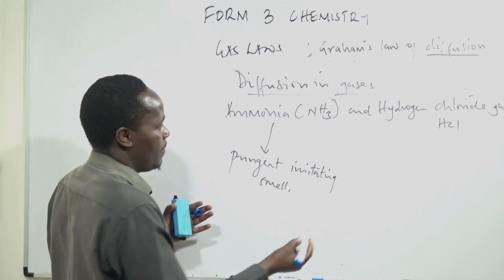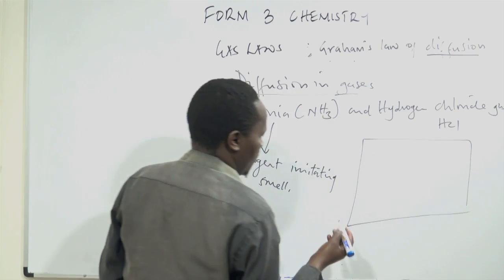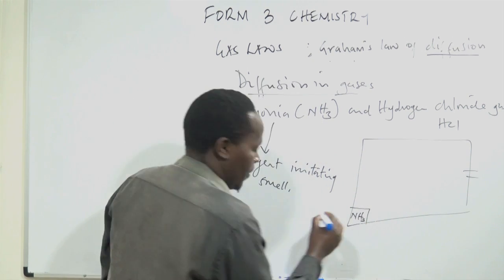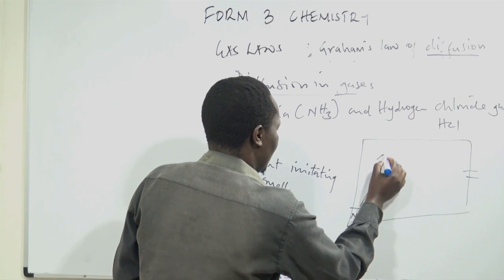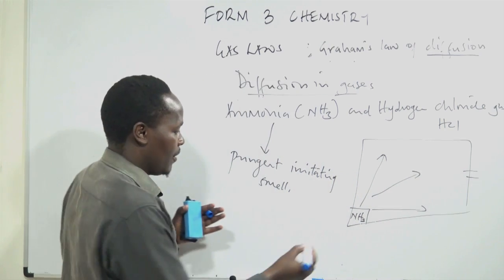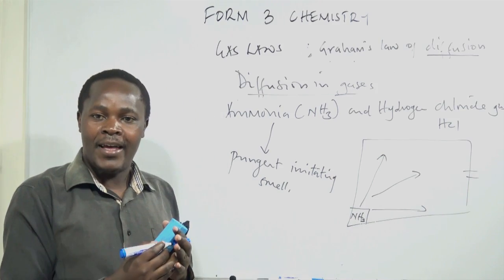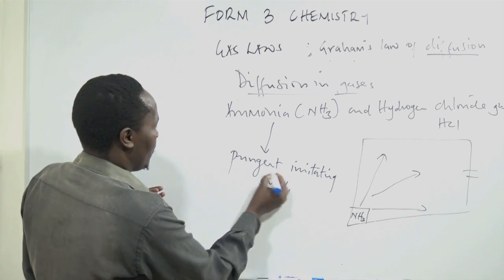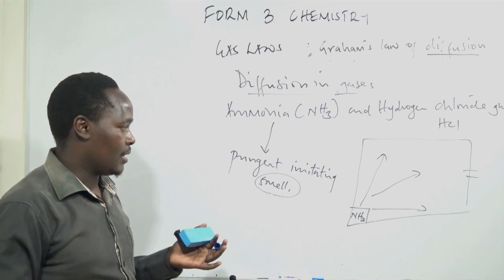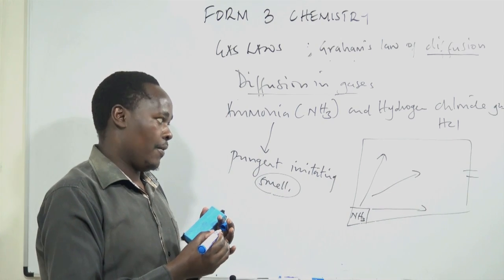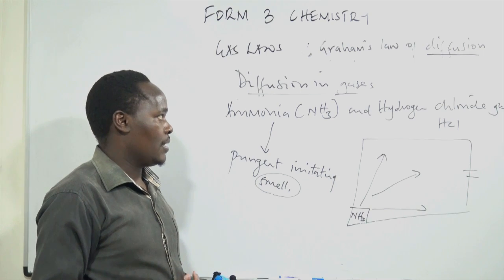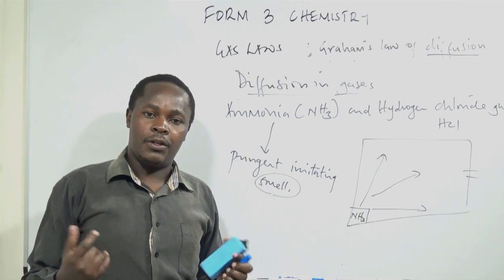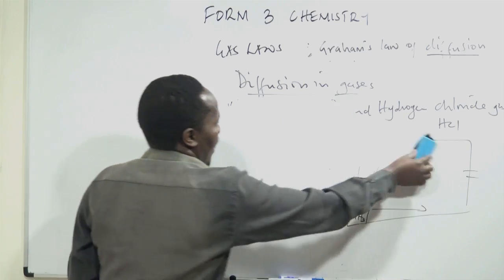The reason why we want to use ammonia gas and hydrogen chloride gas is because we want to compare the rate of diffusion of the two gases. Which gases are we going to use? Ammonia gas, NH3, and hydrogen chloride gas, HCl. So before we go into details of how we compare the rate of diffusion of ammonia and hydrogen chloride gas, one physical property of ammonia gas is that it can be identified by its characteristic pungent, irritating smell.